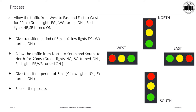Once the 20 milliseconds for the east-west direction is over, give a transition period of 5 milliseconds where yellow lights on east and west are on and green lights of east-west are off. When the 5 milliseconds transition period ends, allow traffic from north to south and south to north for 20 milliseconds by turning on green lights on north and south and turning on red lights on east and west. After 20 milliseconds, give a 5 milliseconds transition on north-south direction by turning on the yellow lights, and then the process repeats continuously.